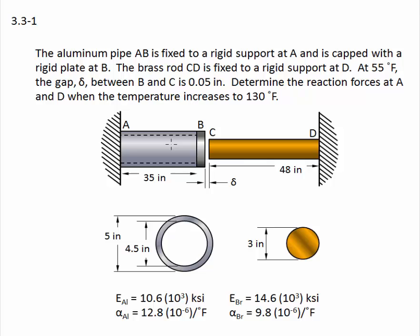Here is the aluminum pipe. Here is the brass rod. We're going to assume that when the temperature increases from 55 degrees Fahrenheit to 130 degrees Fahrenheit that the gap closes and the two members come into contact, which causes an internal force and then reactions at A and D. Here we have cross-sections of each member and the material properties we need to do this problem.